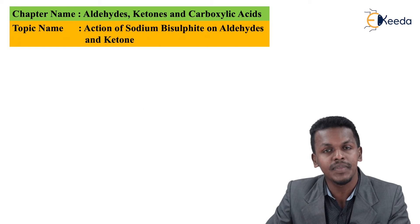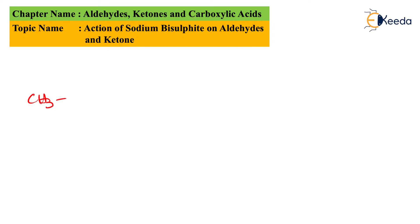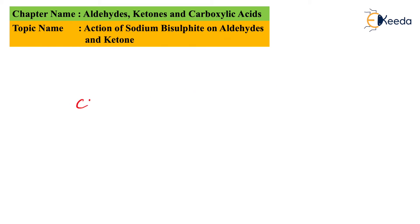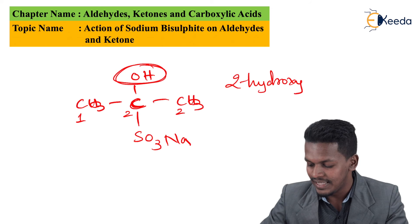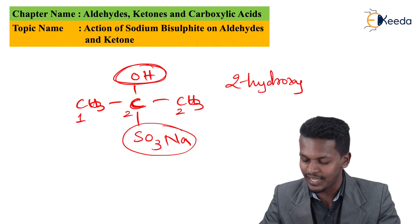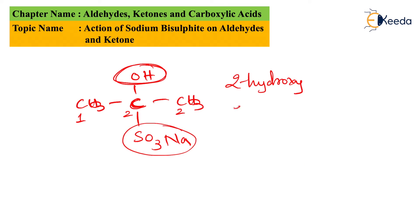For example, consider acetone: CH3-C(=O)-CH3 reacting with NaHSO3. The product obtained is CH3-C(-OH)(-CH3)(-SO3Na), which is a hydroxy sulfonic acid. Starting the numbering from one end: carbon 1, carbon 2, carbon 3 — the SO3Na group is attached to carbon 2, so the product is called 2-hydroxypropane-2-sulfonic acid (sodium salt).